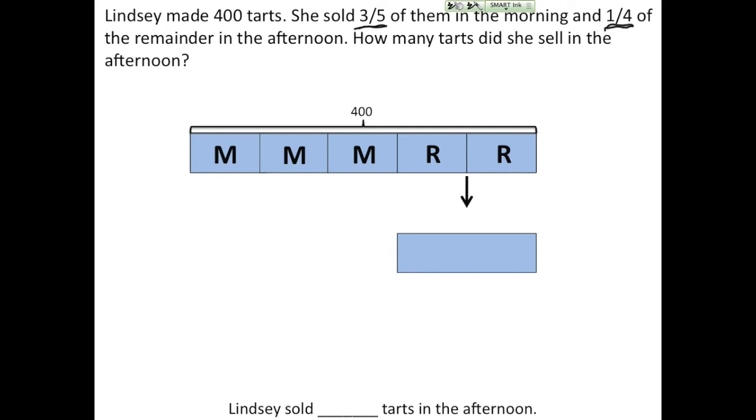So now we want to split this up into four parts because it says one-fourth of the remainder was sold in the afternoon. I'm going to label one of those units A for afternoon. I'm asked how many tarts did she sell in the afternoon? So A is my question mark. I want to find out how many she sold in the afternoon and now I can solve.